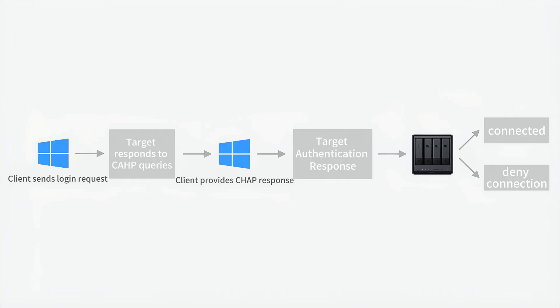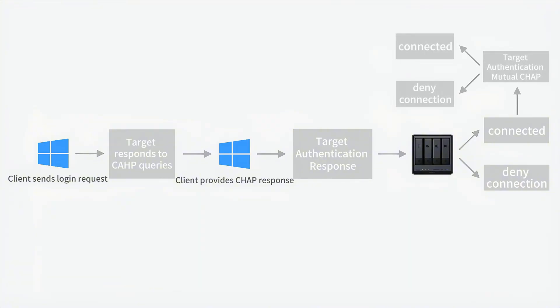CHAP is a security protocol for iSCSI. With standard CHAP, only the NAS verifies the client's identity. With mutual CHAP, both the NAS and client verify each other, providing stronger security.